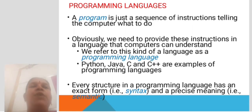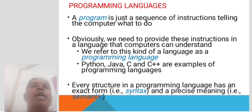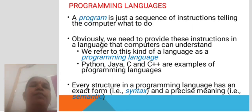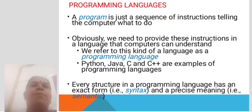Python, Java, C, and C++ are examples of programming languages. Every structure in a programming language has an exact form — that is syntax — and a precise meaning — that is semantics.